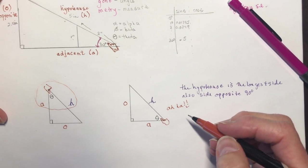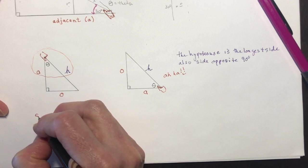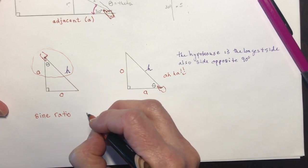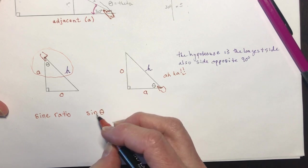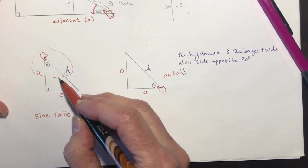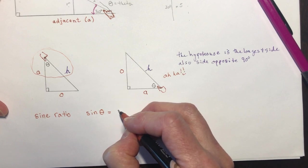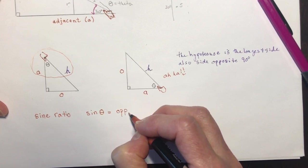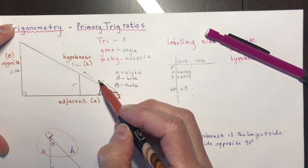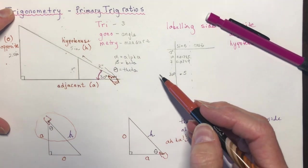Once the sides are labeled, there are three primary trig ratios. The first one is called the sine ratio. When you talk about the sine ratio, you write sine of theta — it has to be sine of something, sine of the angle — because you're describing the opposite over the hypotenuse. That's our first primary ratio: opposite over hypotenuse. So we're talking about a ratio all the time — the sine ratio.